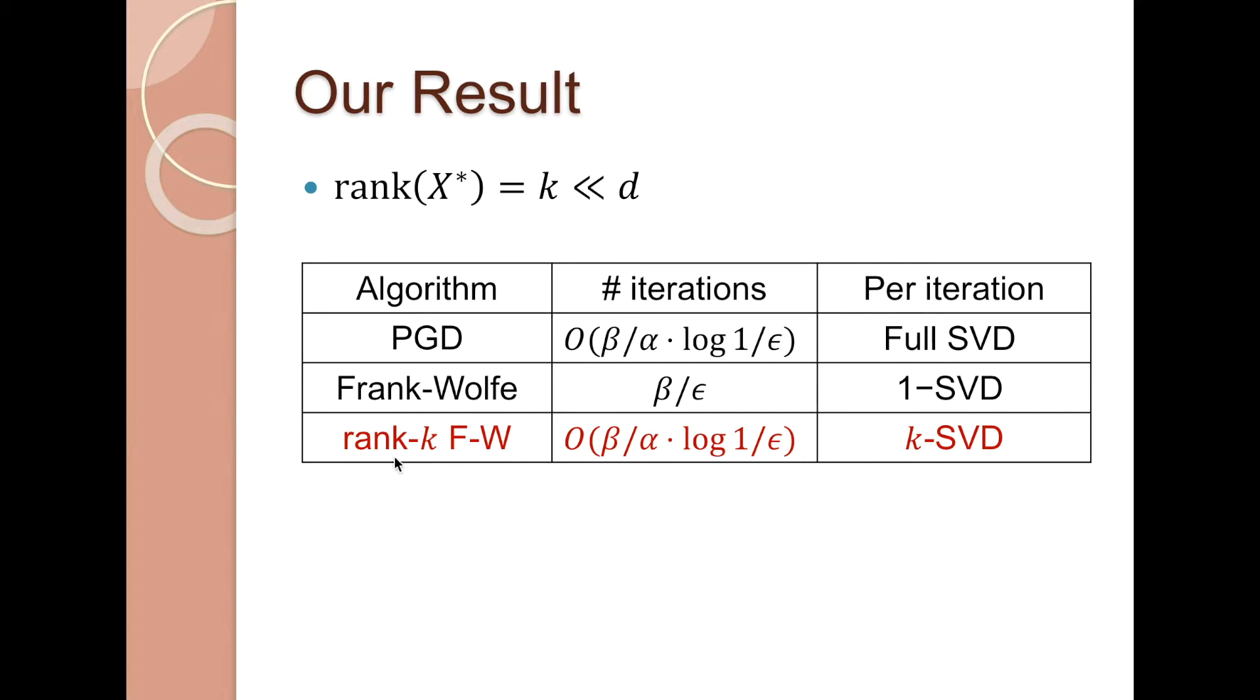We propose a rank-k variant of the Frank-Wolfe algorithm, which can achieve linear convergence, the same as projected gradient descent. But per iteration, we only need to compute the k-SVD, which is the top k singular vectors of a certain matrix. This is why we regard our algorithm as a rank-k variant of the Frank-Wolfe algorithm.